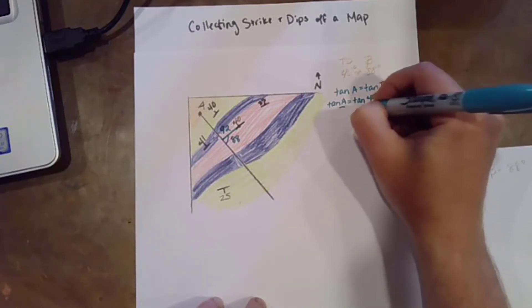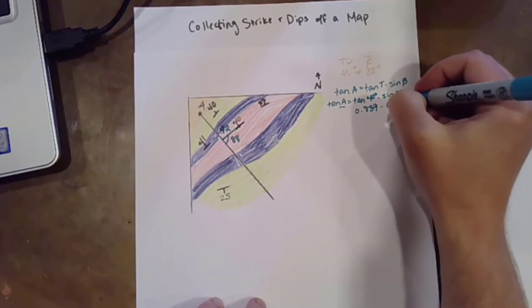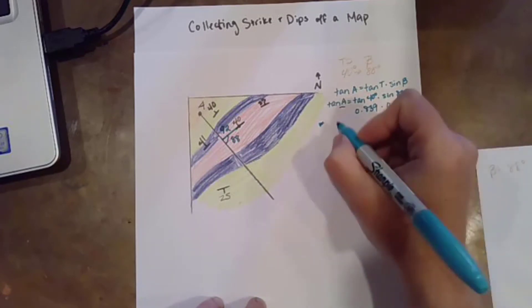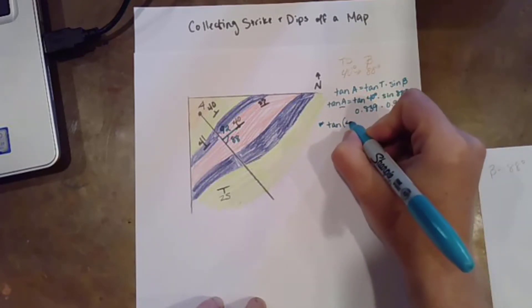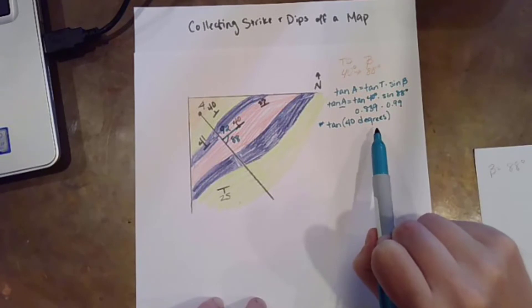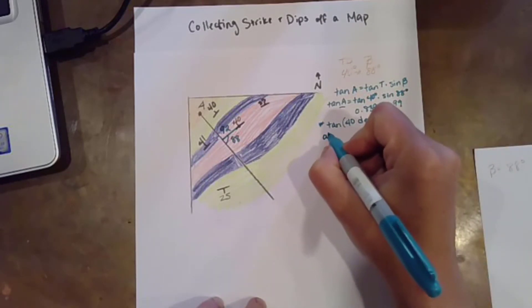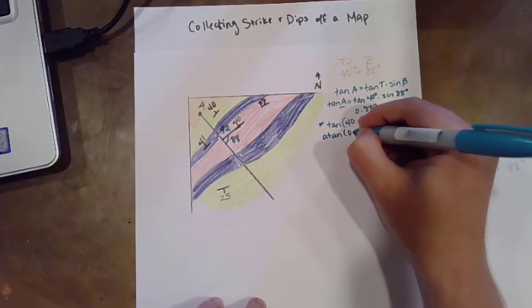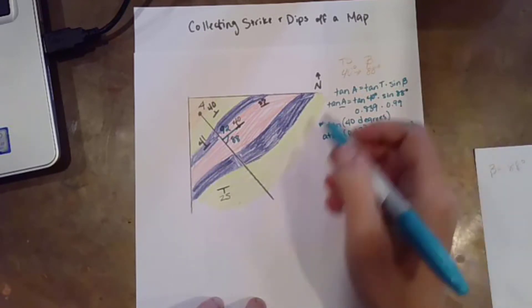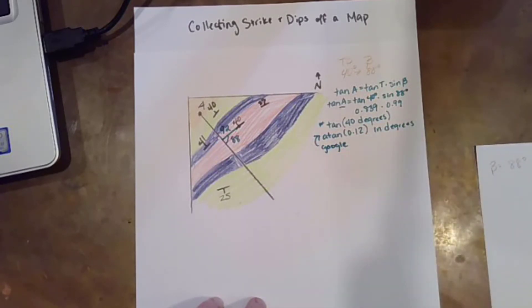Tangent of 40 degrees is 0.839. Sine of 88 degrees is 0.99. Also, just a word, if you don't have a calculator and you're googling this, make sure that the phrase you type into Google is tangent of 40 degrees. Make sure that you actually type in the word degrees on that. Same thing if eventually we're going to do an inverse tangent. So if I wanted to know the inverse tangent of a value, I would say something like atan degrees. So this type of phrasing is what you're going to use in Google to look up those values.